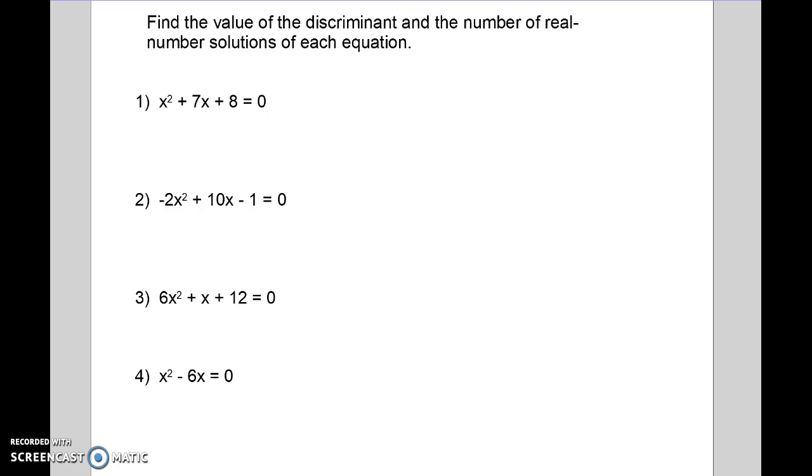So using the discriminant, we're going to figure out how many solutions some of these have. So if you look at the first one, a is 1, b is 7, c is 8. And if we plug in, we have 7 squared minus 4 times a times c, which gives us 49 minus 32. And this is going to give me a positive number. So I know that this one is going to have two solutions.